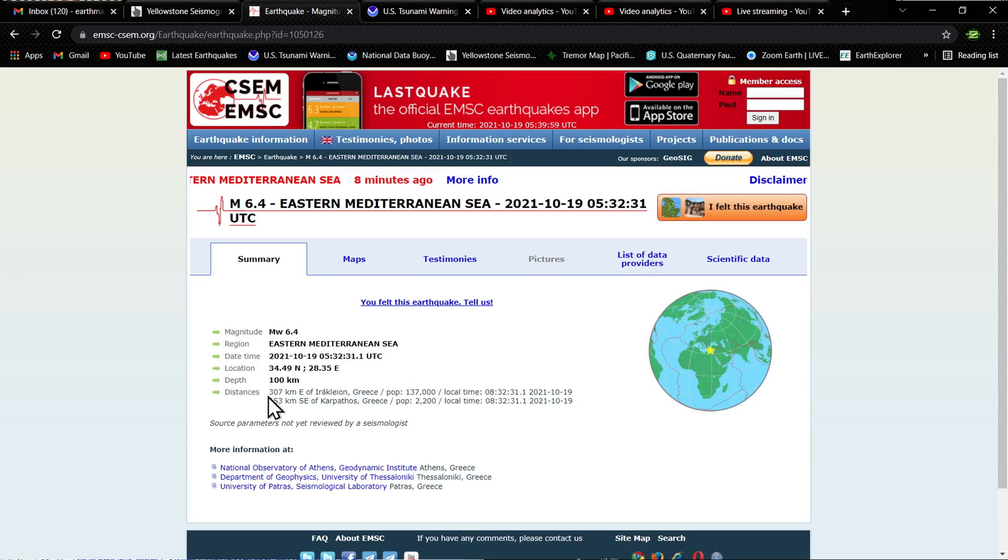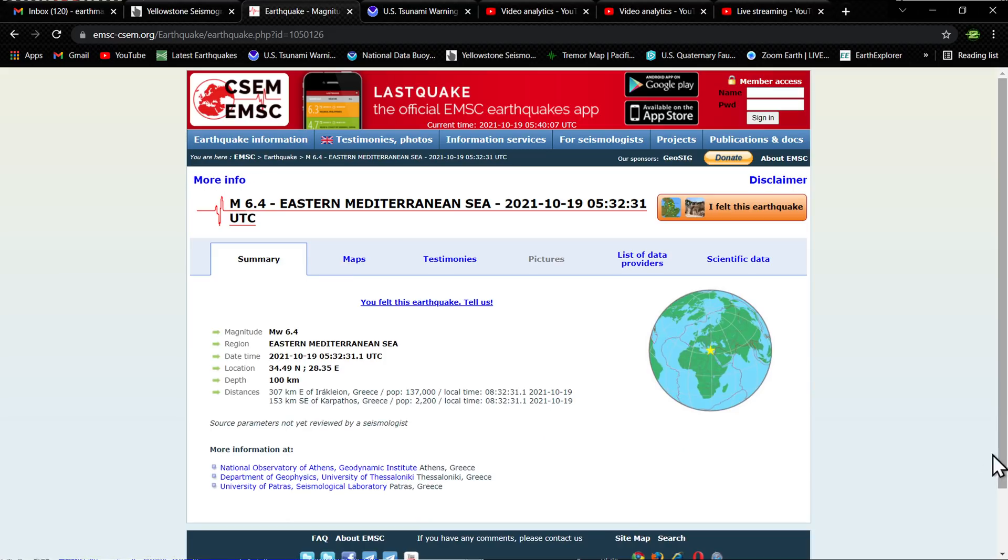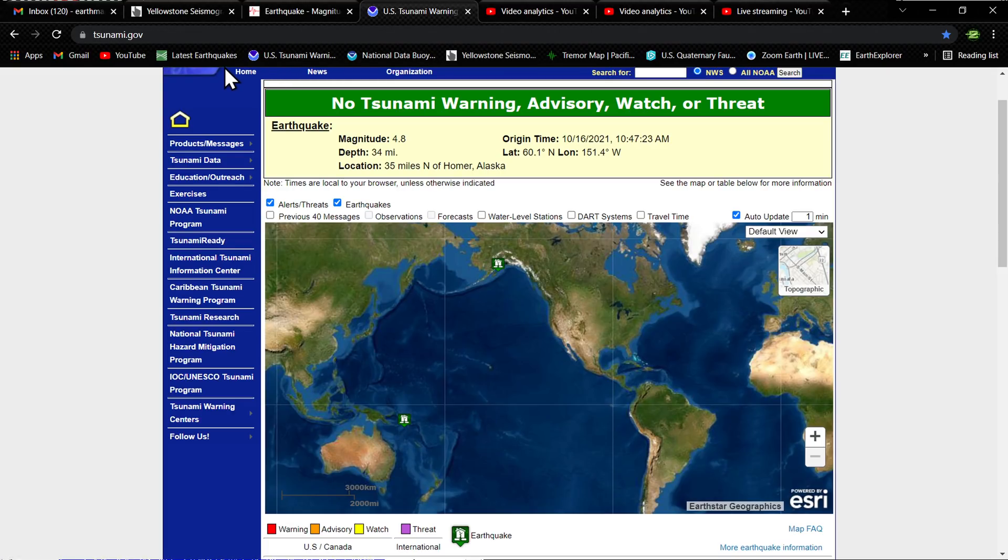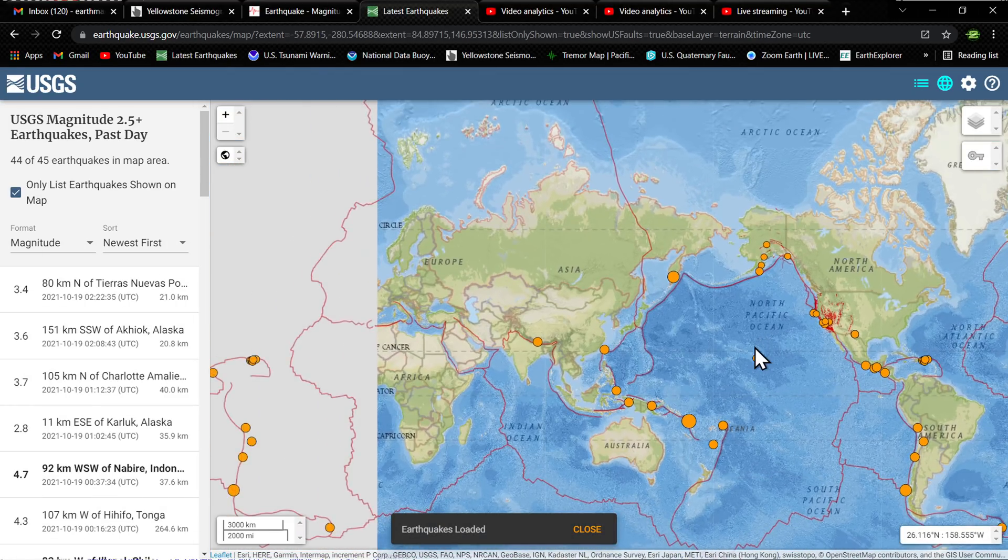The depth of this earthquake about 10 kilometers and you can see the epicenter there on the map. Let's go ahead and bring in the map here real quick. Of course, the source parameters on this specific earthquake has not been reviewed by a seismologist yet. And I am not seeing anything listed on the tsunami warning page or the USGS map yet.